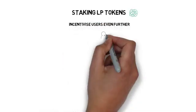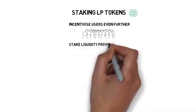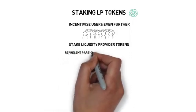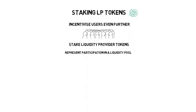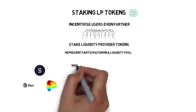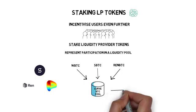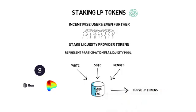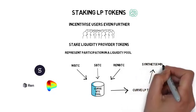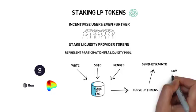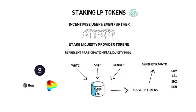Staking LP tokens is another strategy. Some protocols incentivize users further by allowing them to stake their liquidity provider (LP) tokens, which represent their participation in a liquidity pool. As an example, Synthetix, REN, and Curve entered a partnership where users can provide WBTC, sBTC, and renBTC to the Curve BTC liquidity pool and receive Curve LP tokens as a reward. These tokens can then be staked on Synthetix Minter, where farmers can be further rewarded in CRV, BAL, SNX, and REN tokens. This is getting quite complicated, and we'll create another video to explain how liquidity pools actually work.